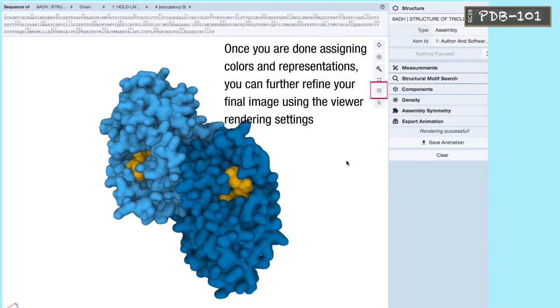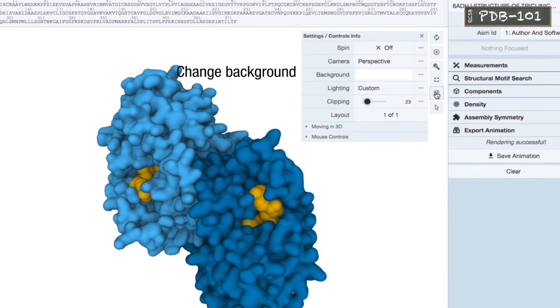Once you are done assigning colors and representations, you can further refine your final image using the viewer rendering settings. You can change background or lighting style.